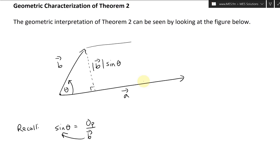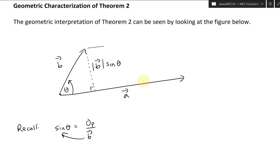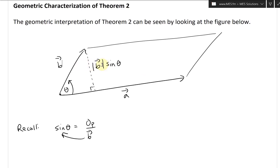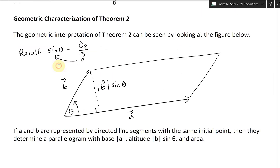Now if we draw this out and draw a perfect parallelogram — make it parallel on all sides — this whole area here equals the base length times this height. That's just the area of this parallelogram. You could view it as a rectangle — a tilted rectangle or parallelogram. A times the height, length times height, is equal to the area of the parallelogram.